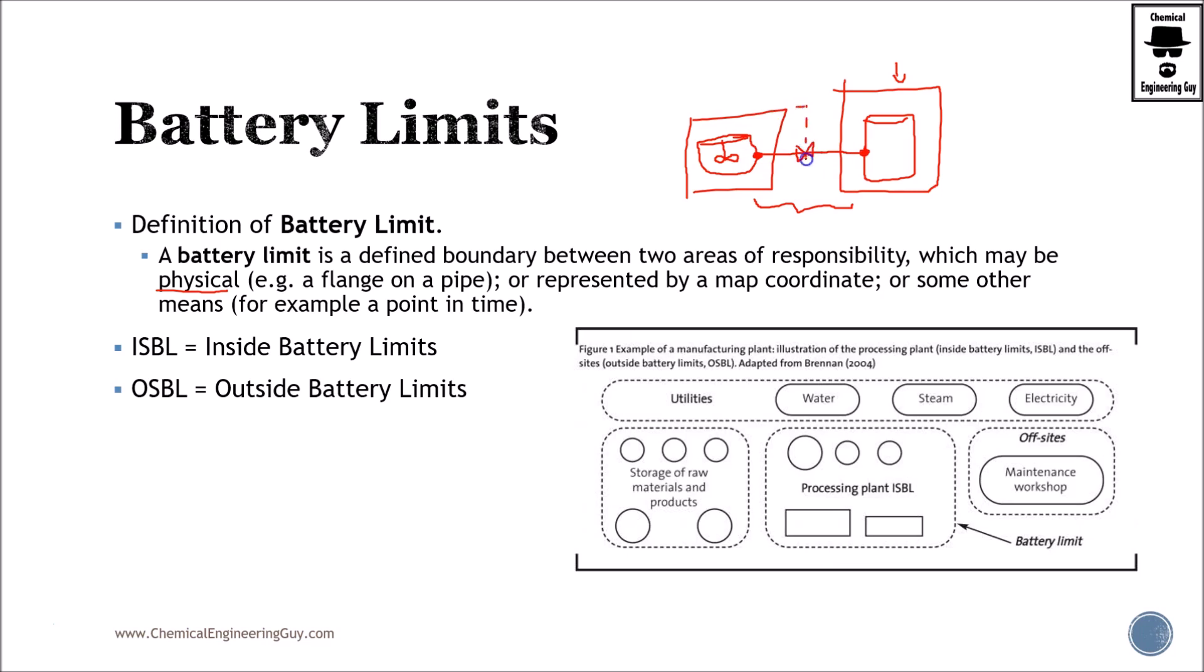Well, you will either need to delegate that. Maybe you will say something physical. From this valve to the left is the tank engineer, and from this valve to the right is the storage engineer. Or maybe you add another battery limit, which is not typical for a single pipe, but it's just for the sake of an example.